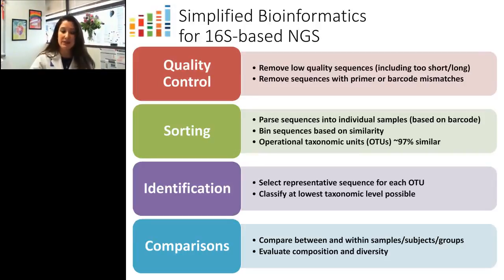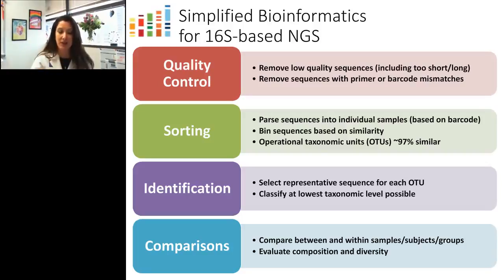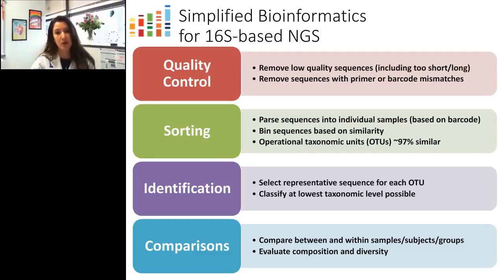Once we have millions of sequences, we quality filter and group them into clusters showing greater than 97% similarity. During this process we also parse sequences back into their original sample IDs based on unique barcode sequences attached during amplification. We then take representative sequences from each cluster and attempt to identify them to the lowest taxonomic level possible, moving on to conduct comparisons via multiple bioinformatic approaches.